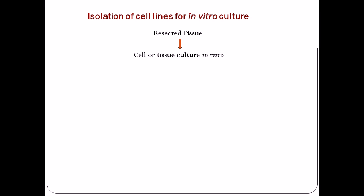We start with the tissue that we want to work with. From that tissue, we take cells or tissue for in vitro purposes. That cell is then used to do the first culture, which is the primary culture — we take fresh cells from the tissue and put them into the culture media with all the nutrients and environment that will support the growth of the tissue and cell growth. That is called the primary culture.